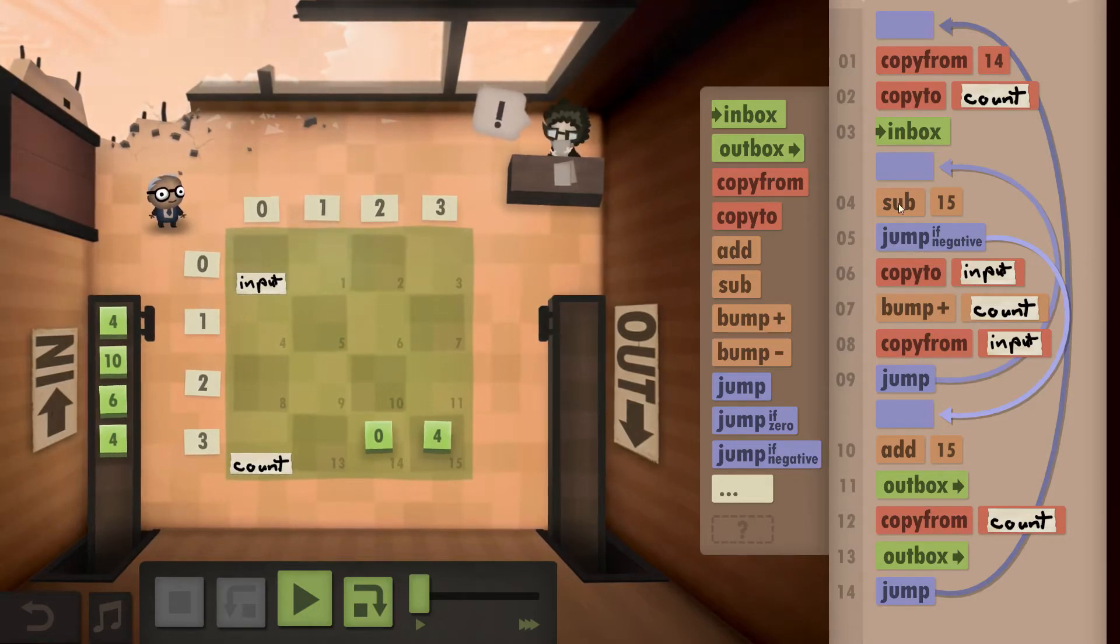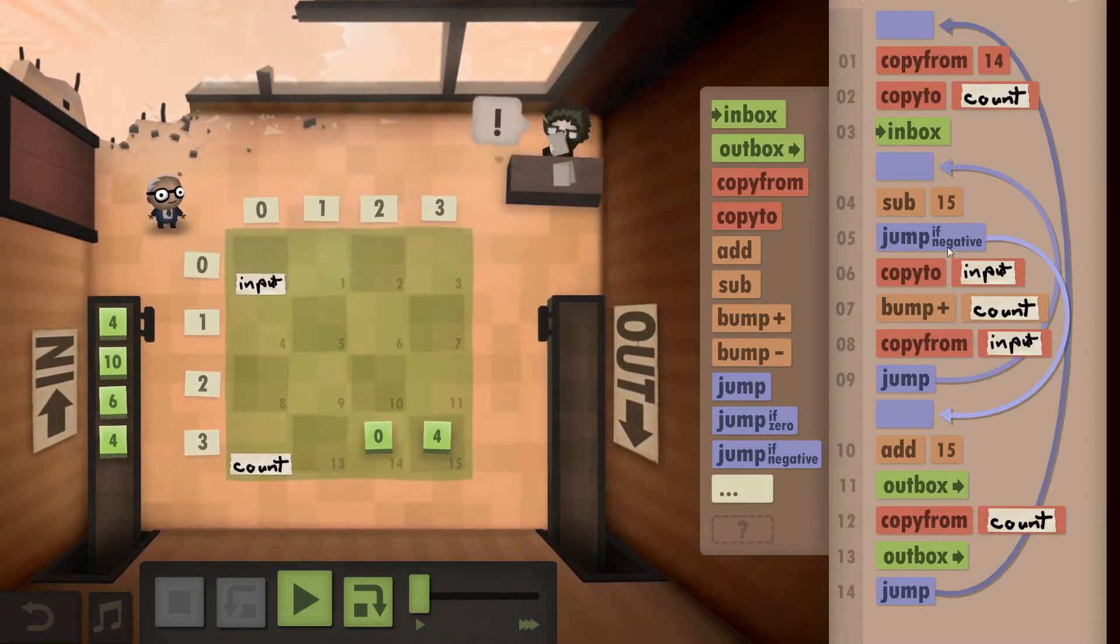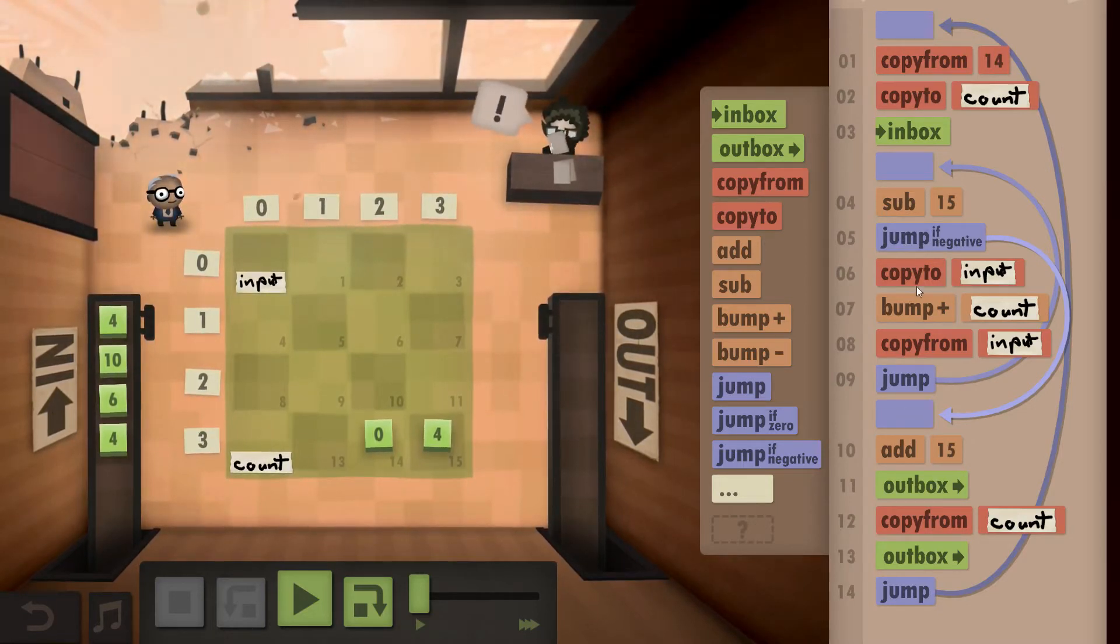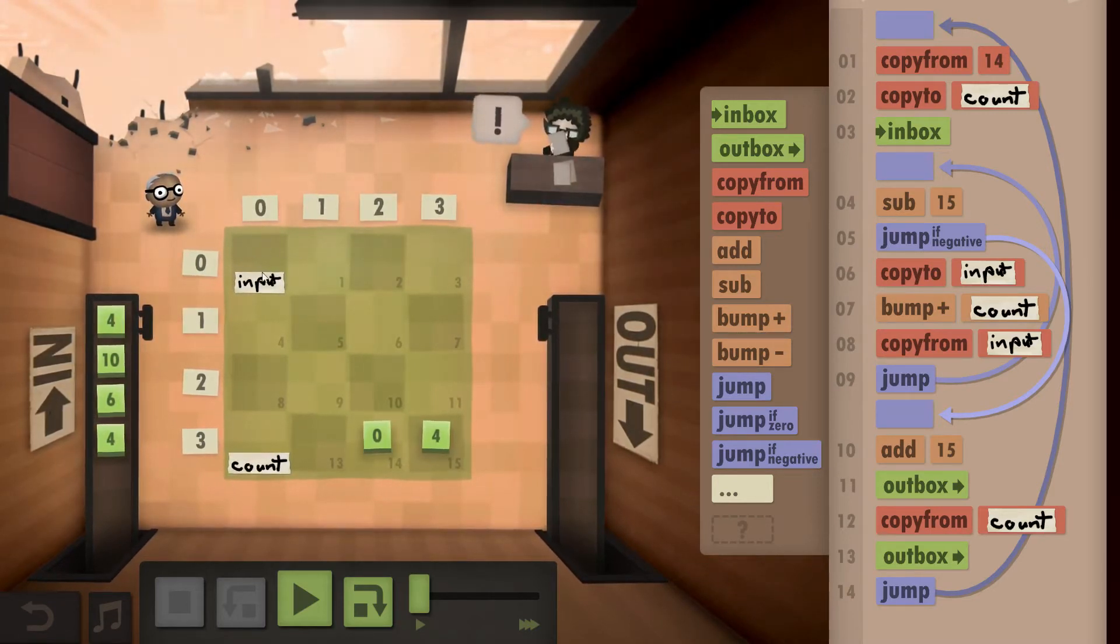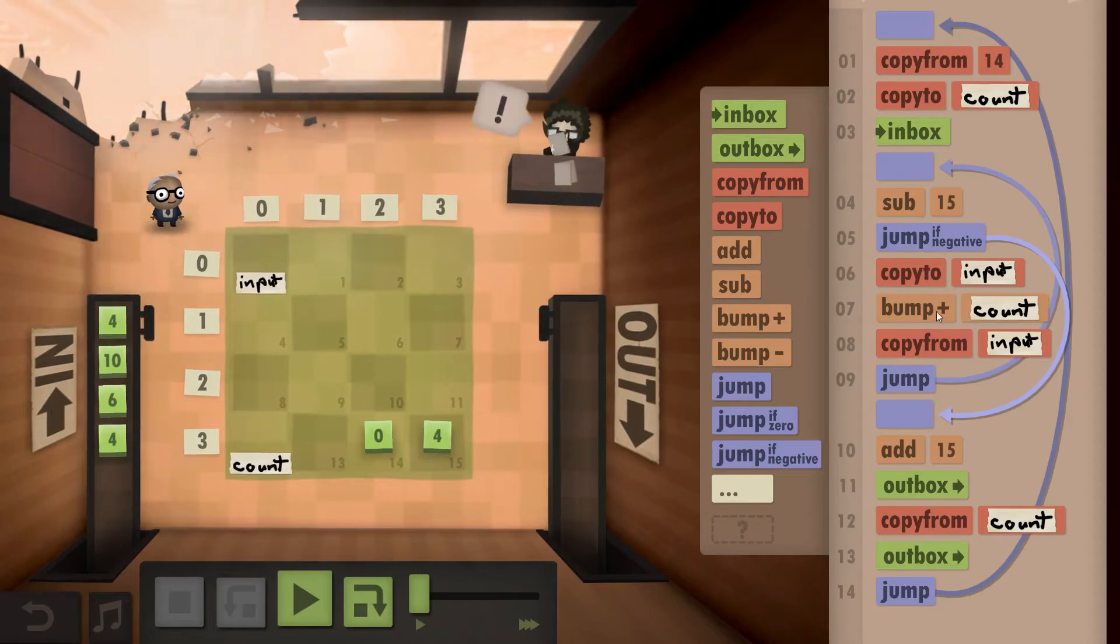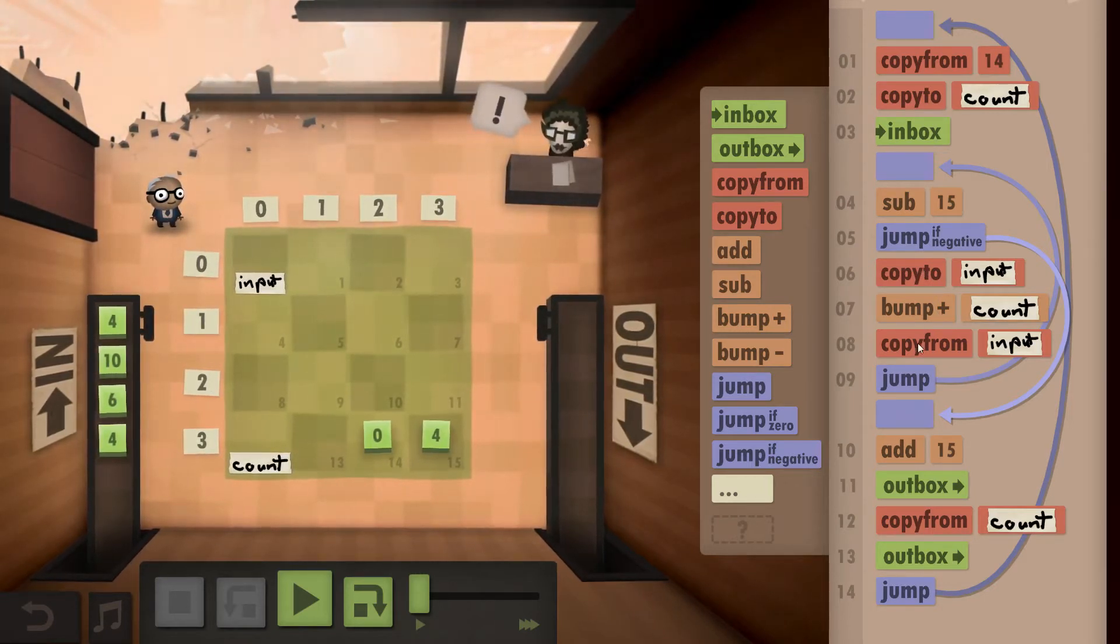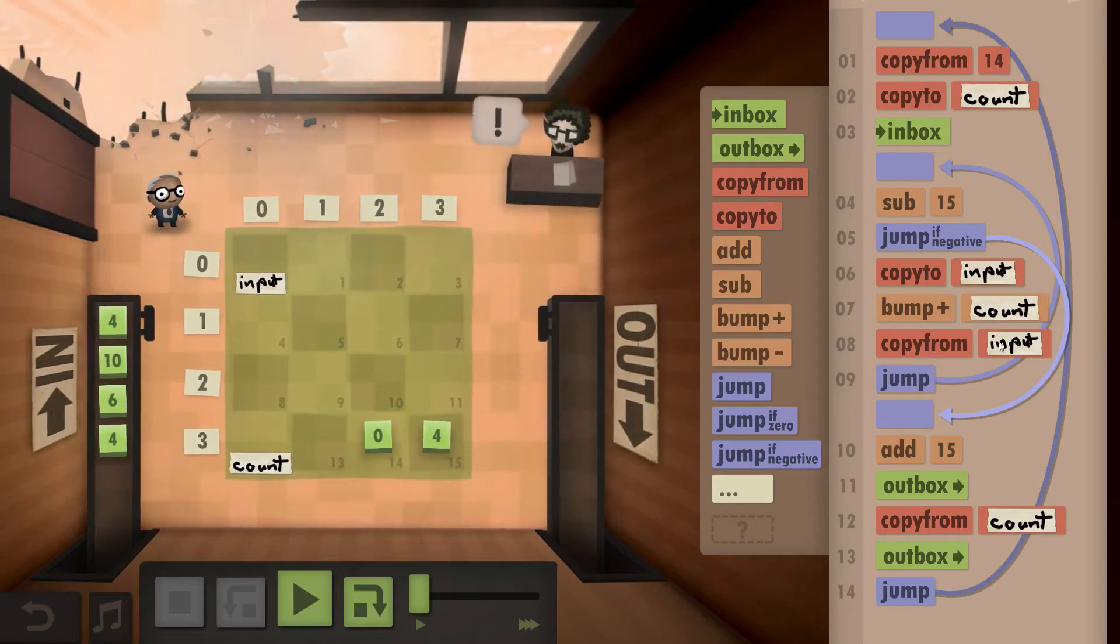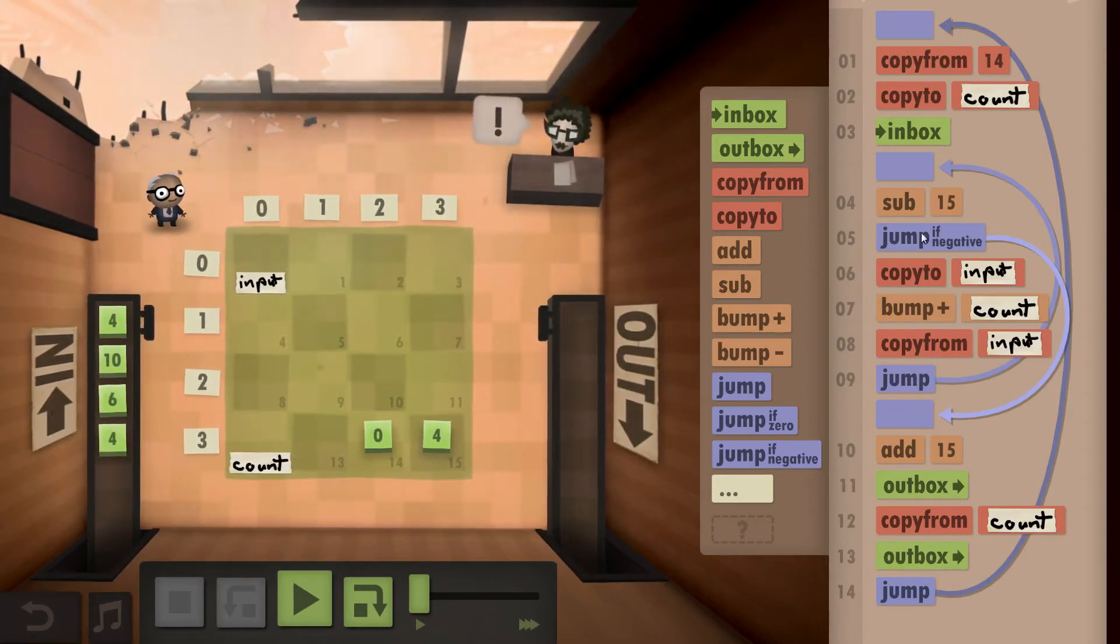So what I did is I subtract the 4. If it's negative, we've reached the end. If not, we copy the result to the inbox, so we basically keep counting downwards by 4 each step. Bump up our count, so the count will be the result of the division ultimately. Then we copy back from the input and loop until we reach a negative.